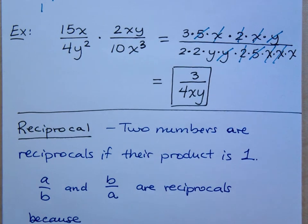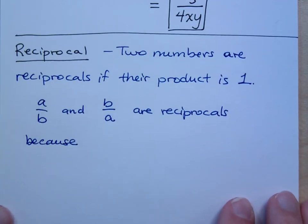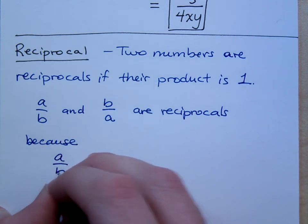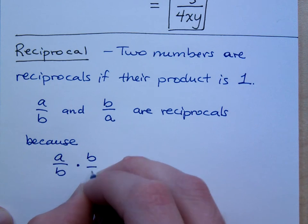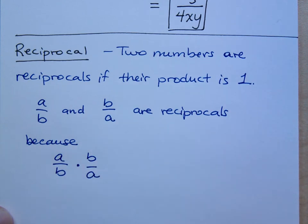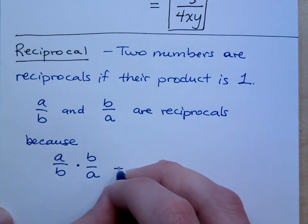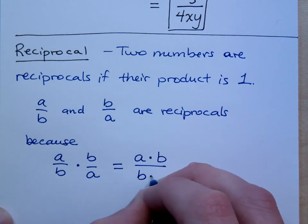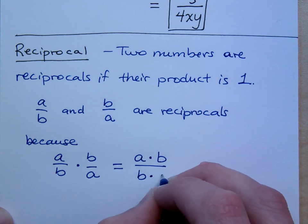So what this means is that a fraction A over B and the fraction B over A, these guys are reciprocals. And you may say, why are they reciprocals? Well, these guys are reciprocals because look what happens when you multiply them.